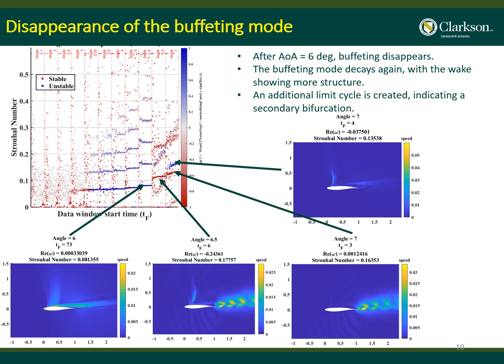Let me explain the disappearance of the buffeting mode. Buffeting starts from angle 3.00 and that frequency line continues until angle 6.00. After angle 6.00 the buffeting disappears — the line is broken. After angle 6.00 the mode starts to decay again, with the wake showing more structured behavior, as you can see in the picture for angle 6.5. At angle 7.00 an additional limit cycle is created, indicated by two lines — one red and one blue — indicating a secondary bifurcation, which is an interesting result.